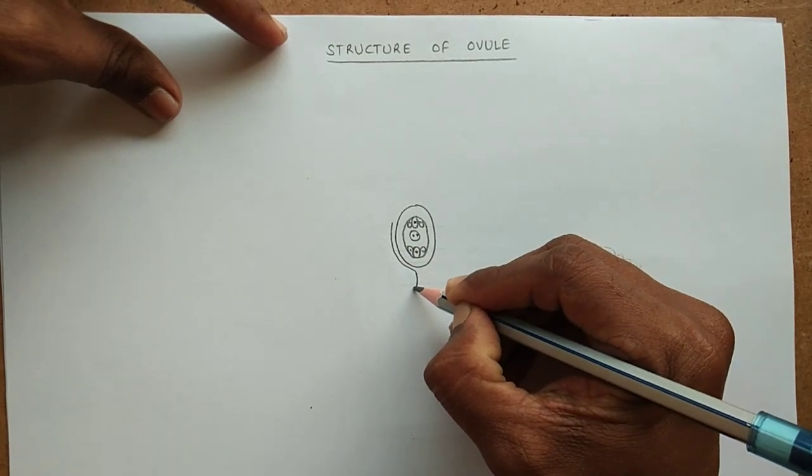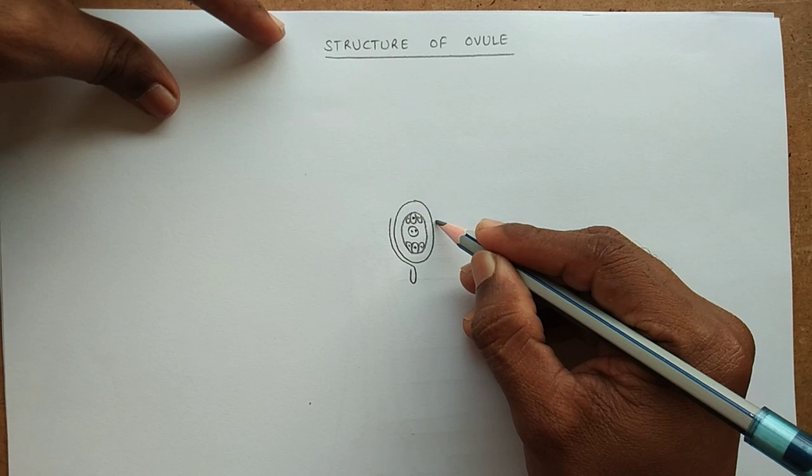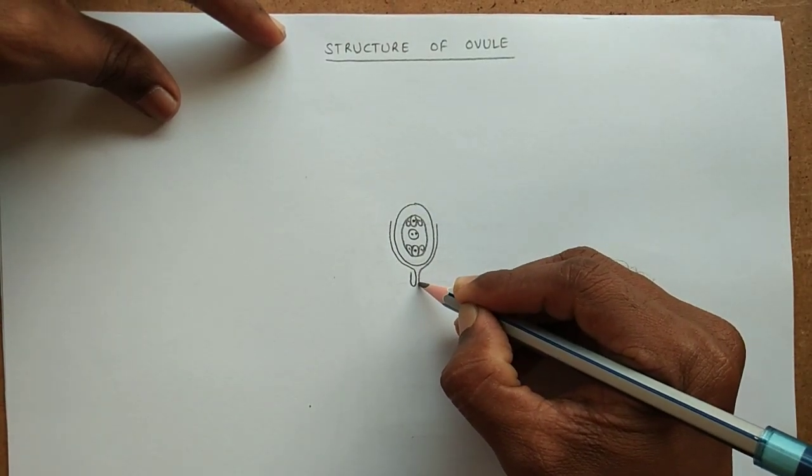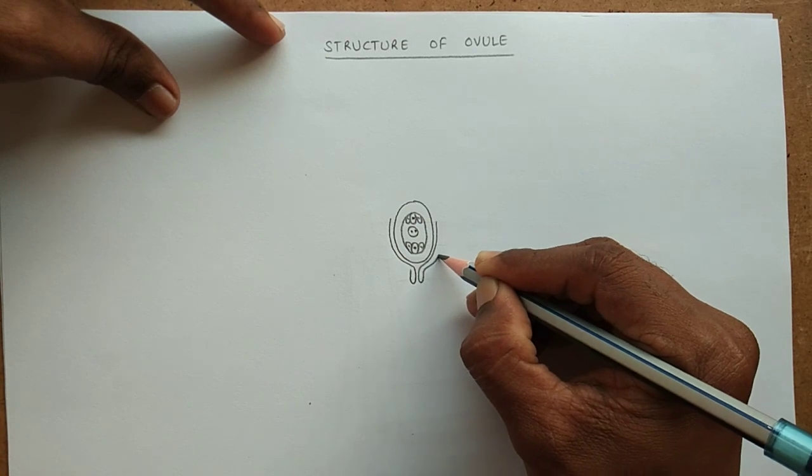Like this, from both sides we have to draw like this. These are integuments.